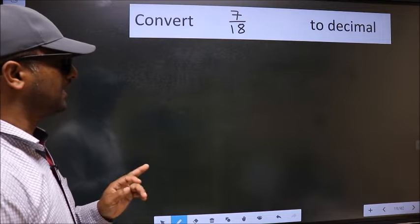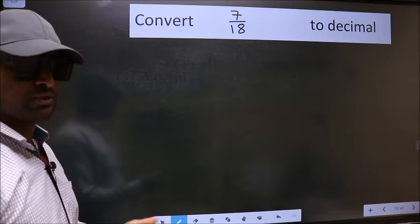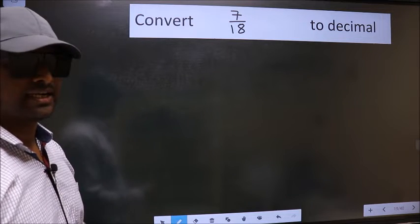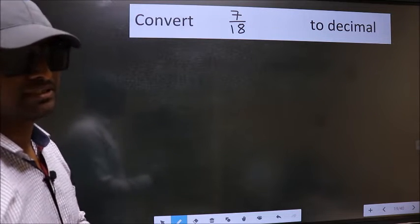Convert 7 by 18 to decimal. To convert to decimal, we have to divide. And to divide, we should frame it in this way.